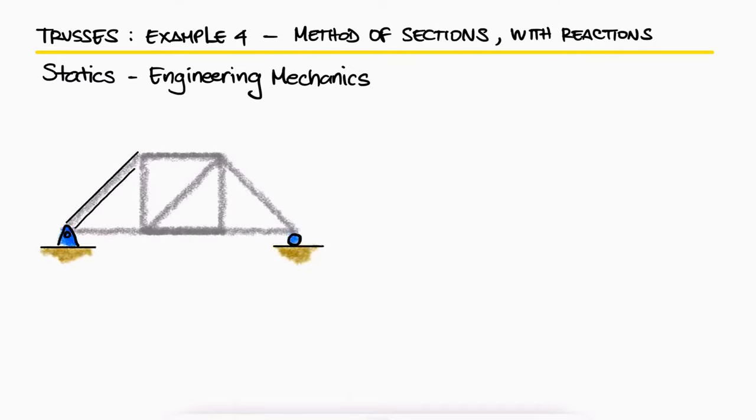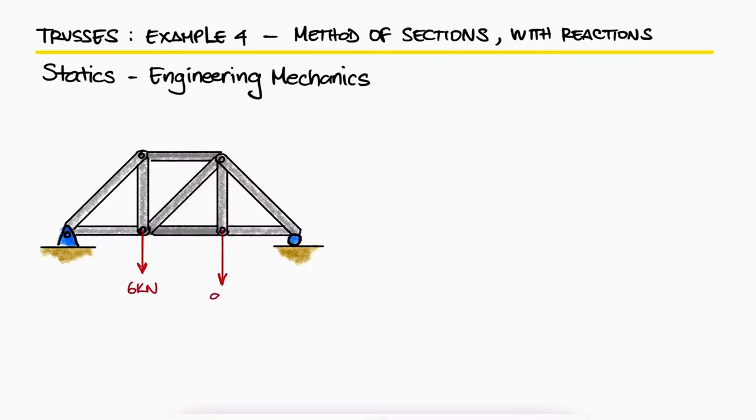For the truss shown, what are the forces in members BC, BE, and EF, and state if these members are in tension or compression?